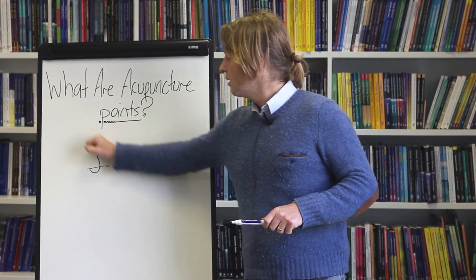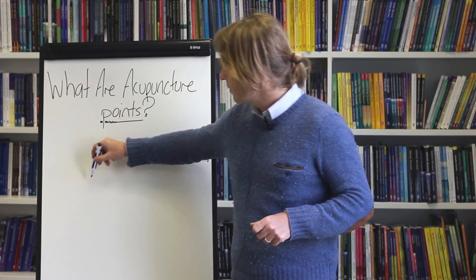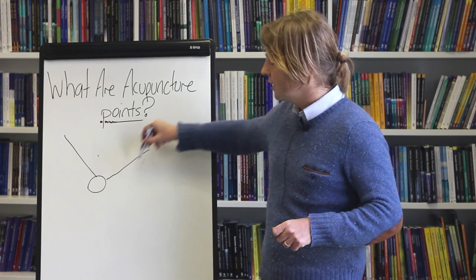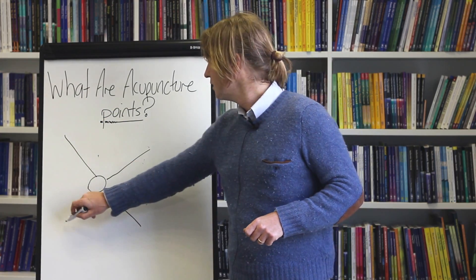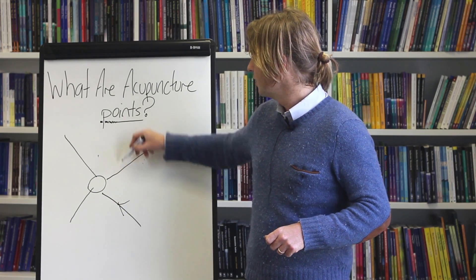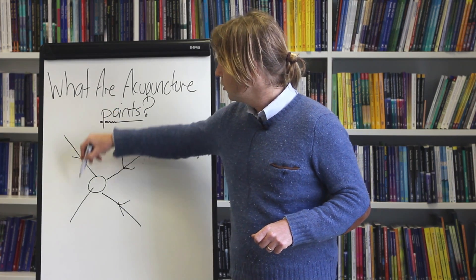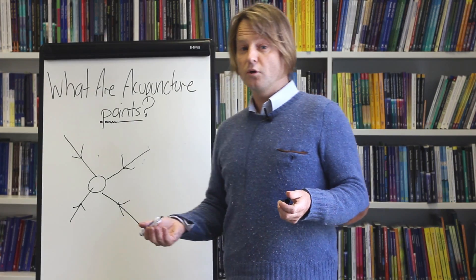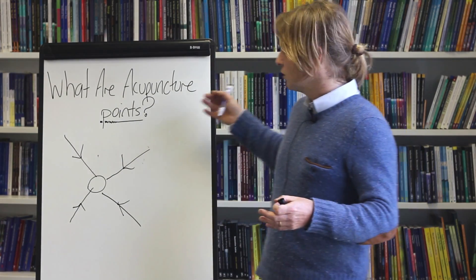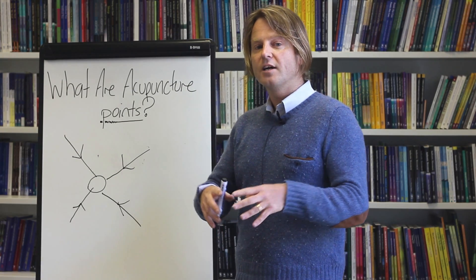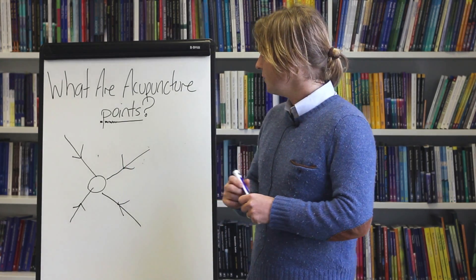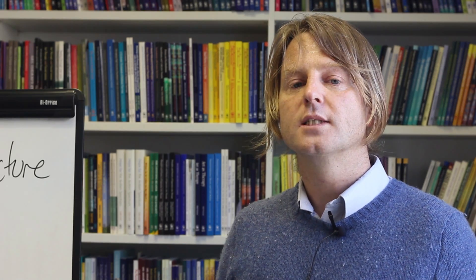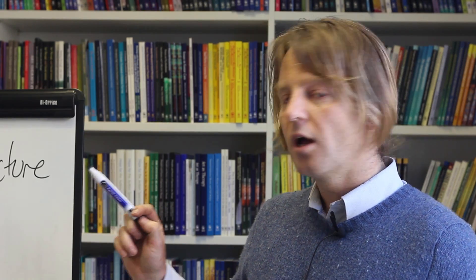They use the word node because what they were describing was a place in the body where lots of information comes into it. Like this. If you imagine the internet, this would be something like Google or Facebook or Twitter. Lots of information all going into this area and then moving on again. To understand what the Chinese were talking about and where the acupuncture points come from, we need to look a long way back.